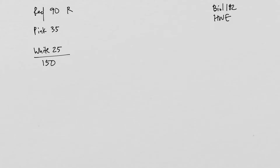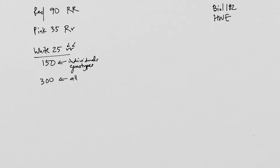We know the genotypes of each of these individuals: red individuals are big R, big R; pink individuals are heterozygous; and white are homozygous recessive, little r, little r. So if we're counting the number of genotypes, there are 150 individuals and 150 genotypes. But because each individual has two alleles, there are 300 alleles in this population.